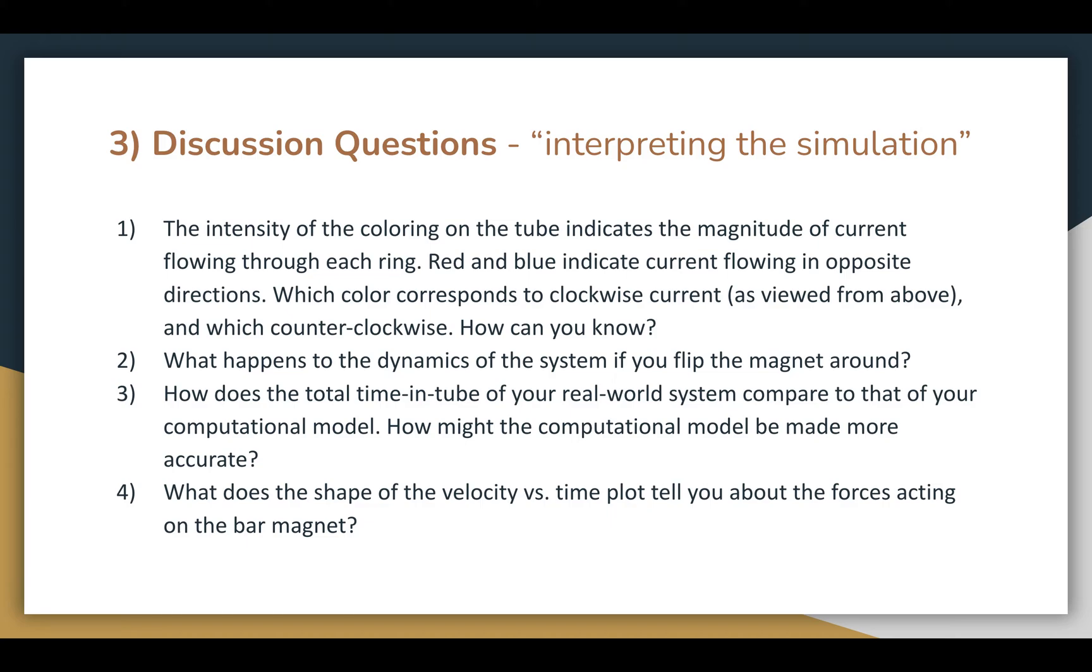Now to answer some of the discussion questions. We know that the intensity of the colors in the computational model correspond to the magnitude of the current flowing through the ring, but which color corresponds to clockwise and which to counterclockwise? While applying Lenz's law, it becomes apparent that red corresponds to counterclockwise and blue to clockwise, as this is the combination that would slow the magnet down. What would happen if we flipped the magnet? Well, nothing. It would still be slowed down, as before, only this time the currents would flow in opposite directions to what we see right now.